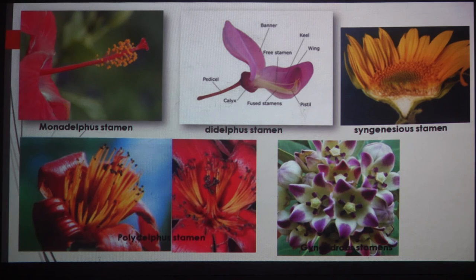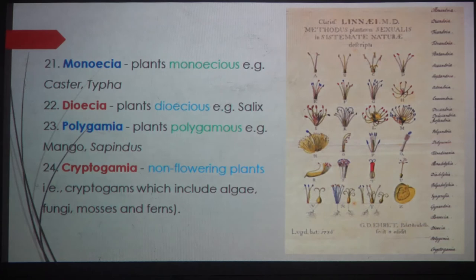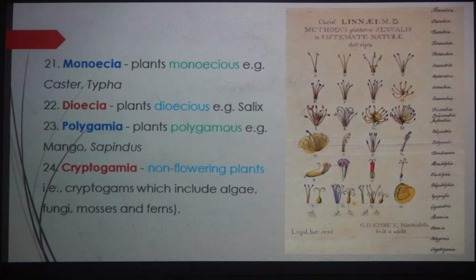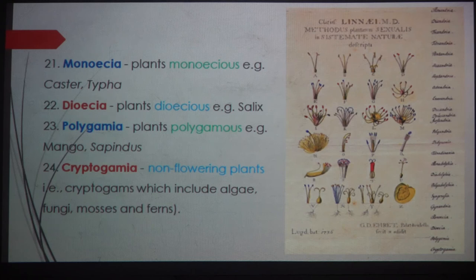Class twenty-one is Monoecia: plants are monoecious — male and female flowers borne on the same plant, examples Castor and Typha. Class twenty-two is Dioecia: plants are dioecious — male and female flowers borne on different plants, example Salix. Class twenty-three is Polygamia: polygamous plants — male, female, and bisexual flowers borne on the same plant, examples Mango and Sapindus.